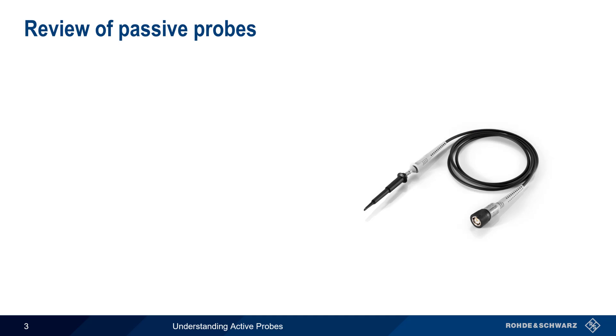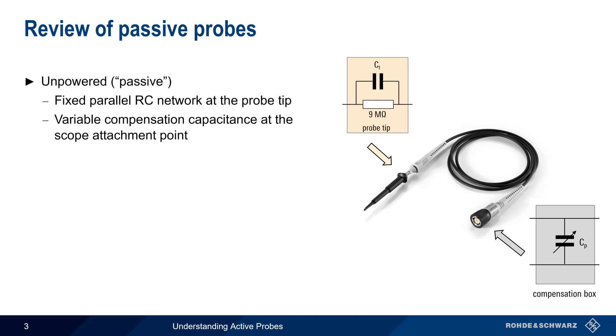Let's start with a brief review of passive probes. As the name implies, passive probes are unpowered. They consist of a pair of conductors with a parallel resistance and capacitance in the probe tip, as well as a variable capacitor for compensation at the scope attachment point.